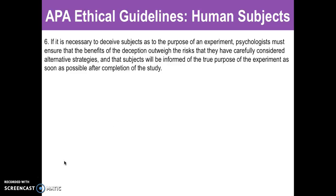The next guideline is: if it is necessary to deceive your subjects because of the purpose of your experiment, you have to make sure that the benefits of that deception outweigh the risks. For example, if you are testing the bystander effect and someone injured is on the floor — they are actually an actor — you have to deceive your subject, because it is in order to test the actual social phenomenon of the bystander effect, and that outweighs the risk.